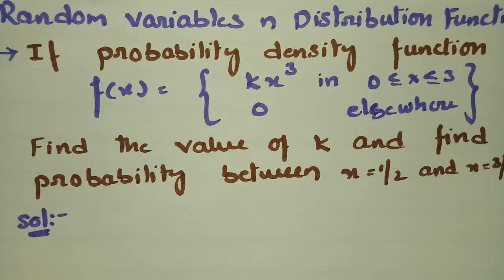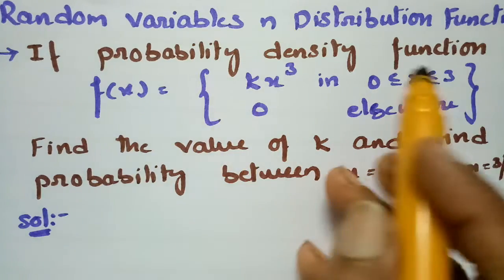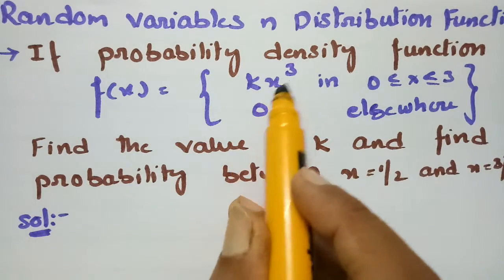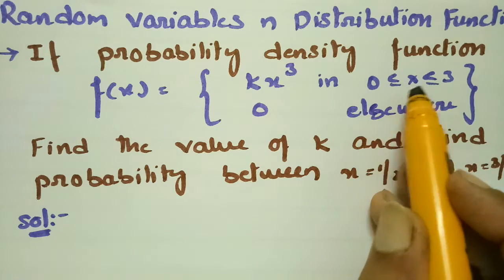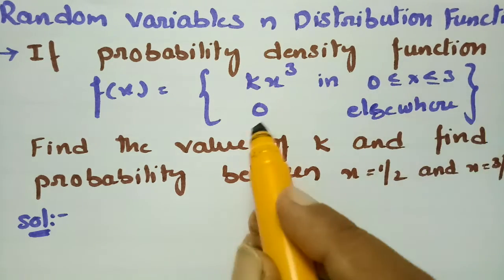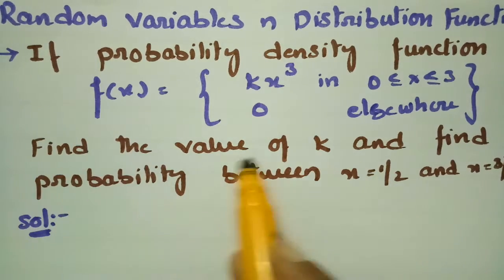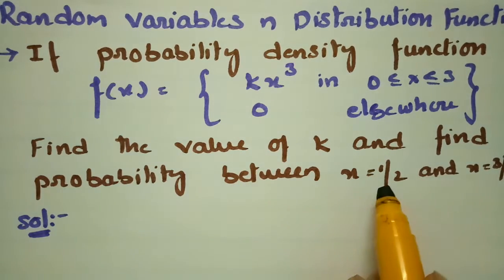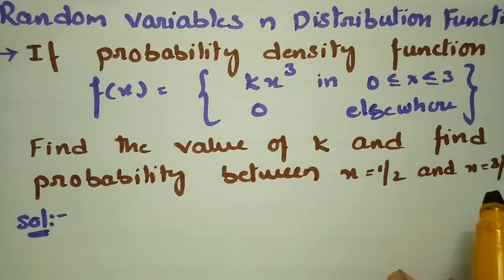This video covers a problem on random variables and distribution functions. The probability density function f(x) is given as k times x cubed for 0 ≤ x ≤ 3, and 0 elsewhere. We need to find the value of k and then find the probability between x = 1/2 and x = 3/2.